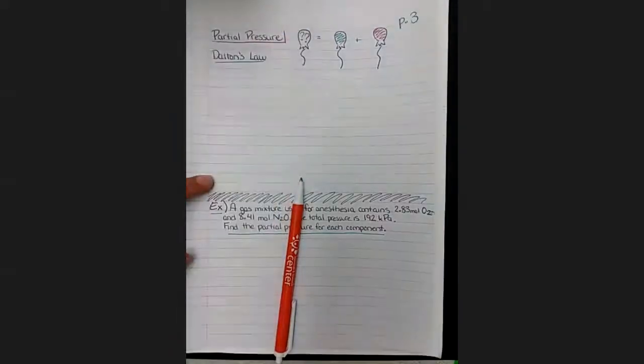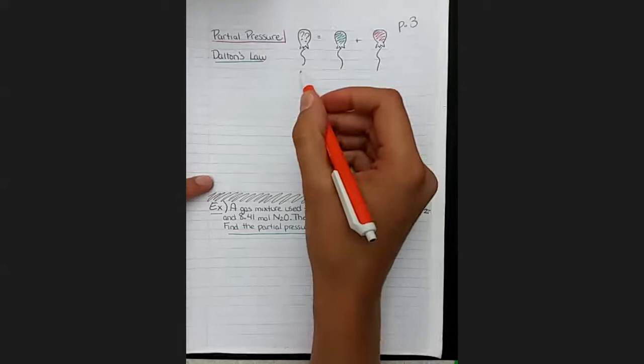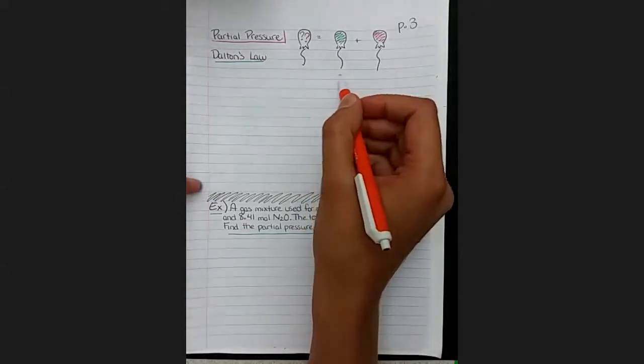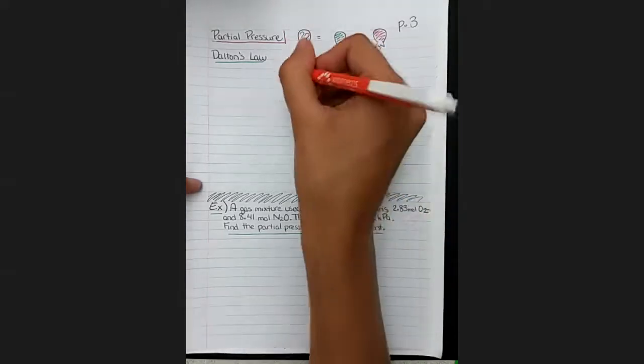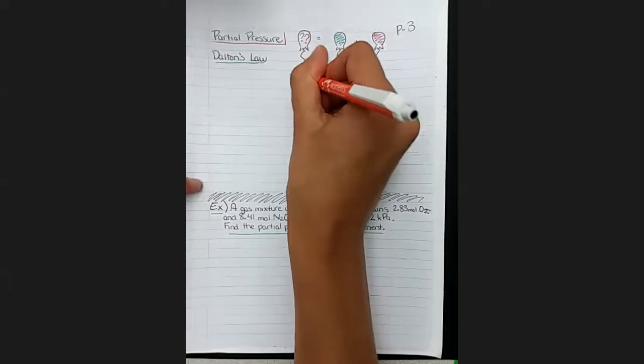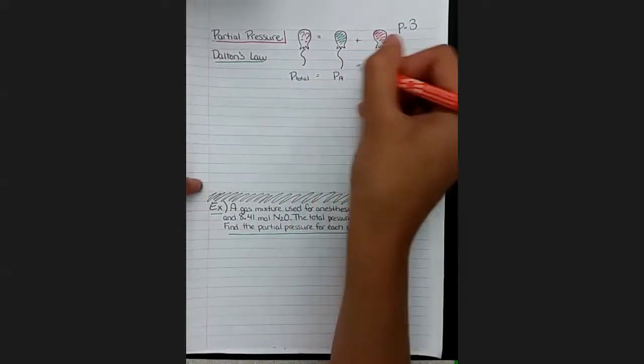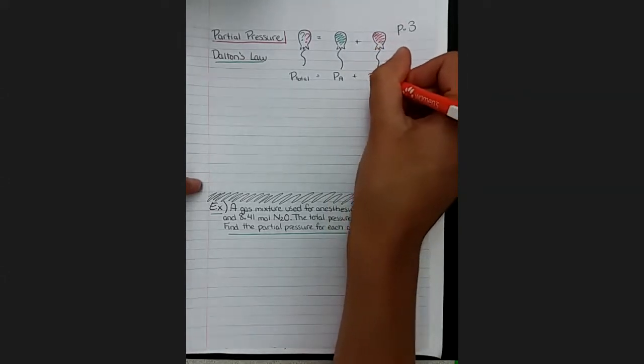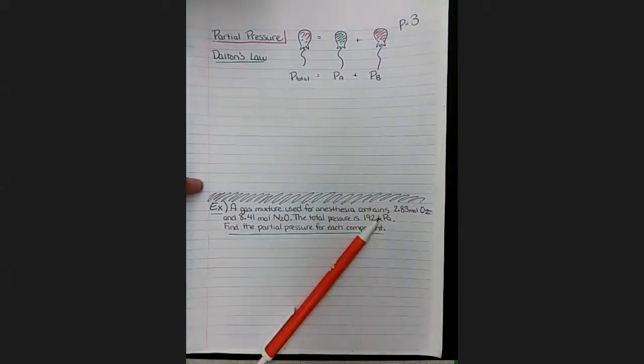We're going to use Dalton's law, and Dalton's law says the total pressure of any gas mixture is equal to the sum of each of the parts as if it were alone in the container. So the total pressure equals the partial pressure of A plus the partial pressure of B plus any others if there was more than two in the mixture.